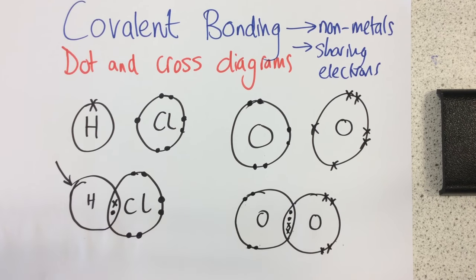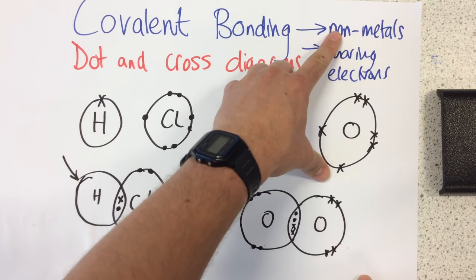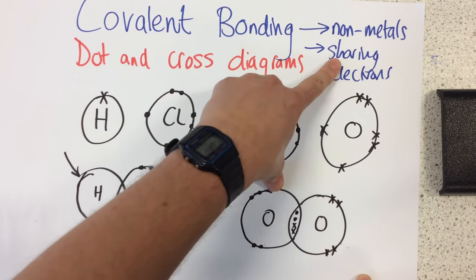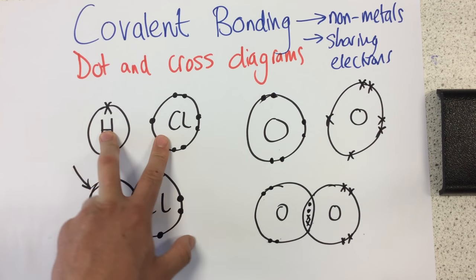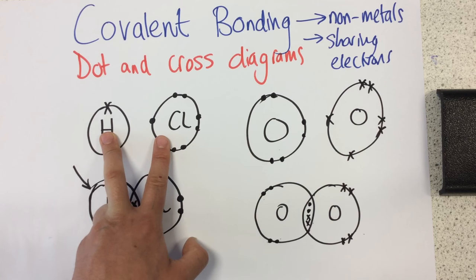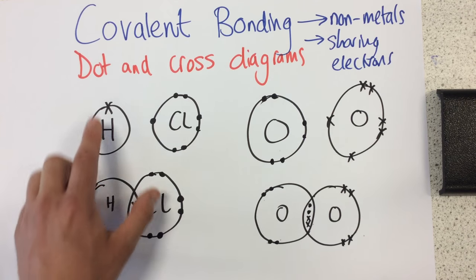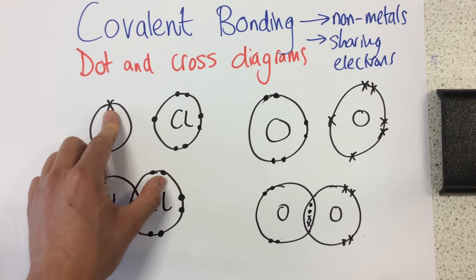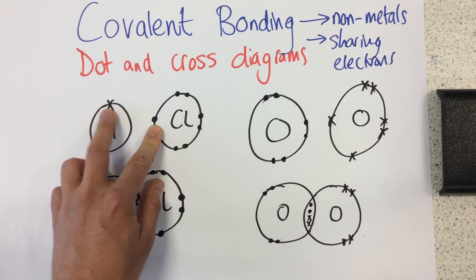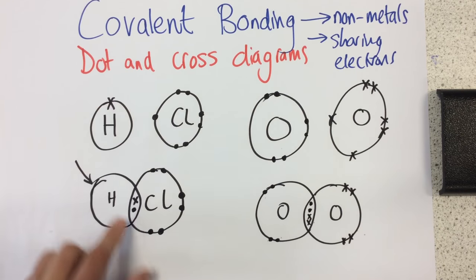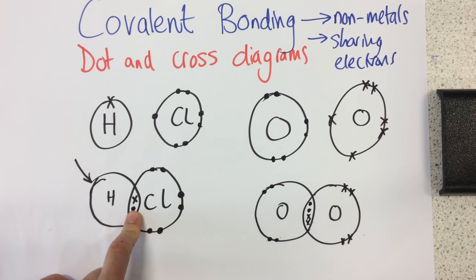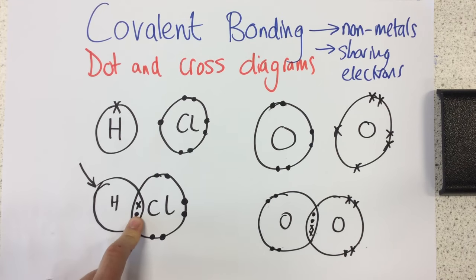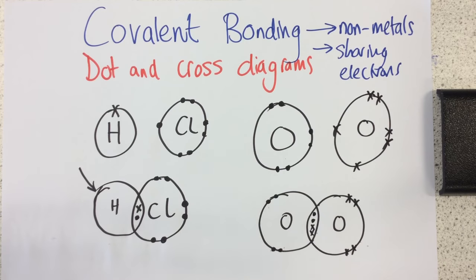So just to recap, the important things are, we know that this only occurs between non-metals, and covalent bonding is sharing of electrons. We think, how many more electrons does your atom need to have a full outer shell? We draw the electrons from one atom with a cross, the other with a dot, to show that they're from different atoms. And we draw these electrons in the middle to show that they're being shared. If we get all of that stuff right, we should be okay. Thank you.